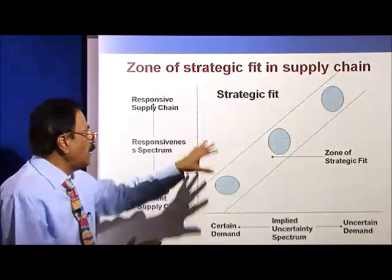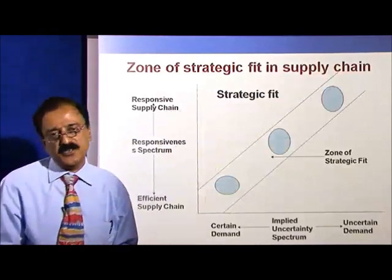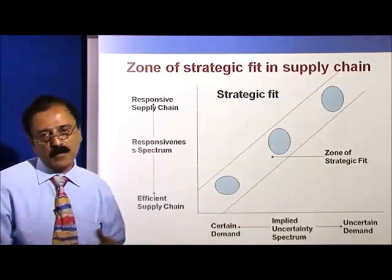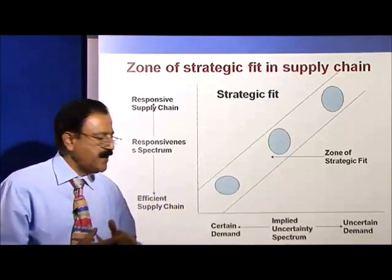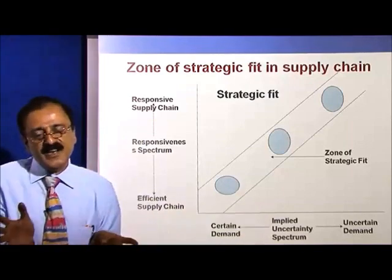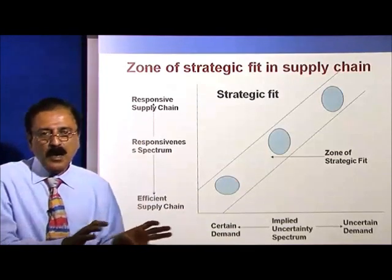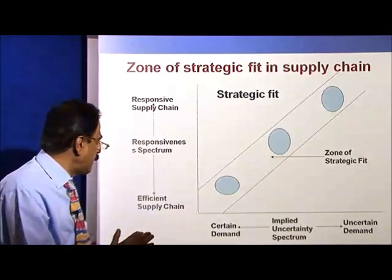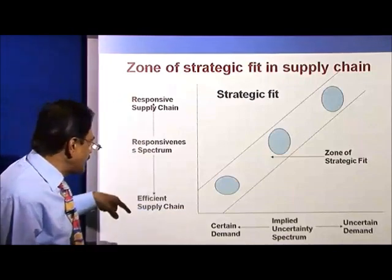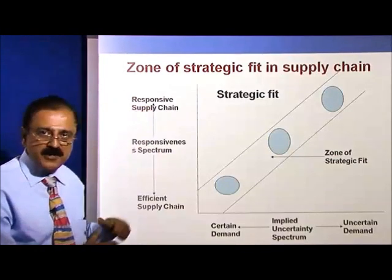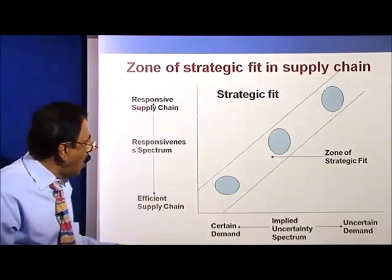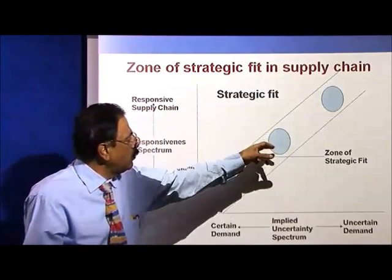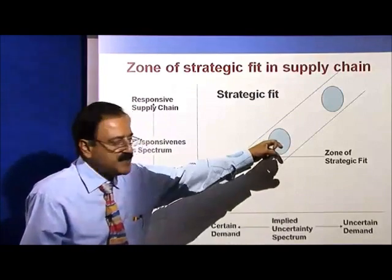What should be the ideal strategic fit in the supply chain? If you look at this graph, we have certain demand and uncertain demand. Most organizations would love to be in the implied uncertainty spectrum — this is a cross between what the customer wants and what is the anticipated demand. On the x-axis we have a responsive supply chain and an efficient supply chain. Most companies would like their product or service to fall in the strategic fit.